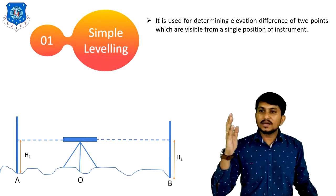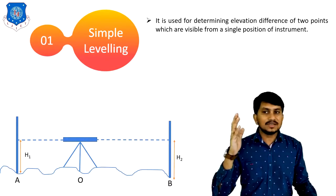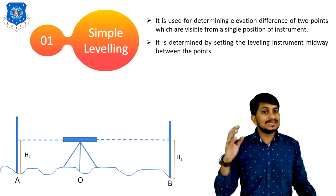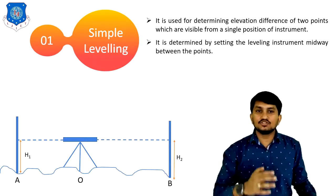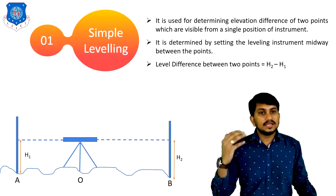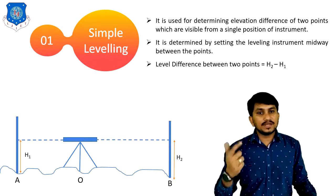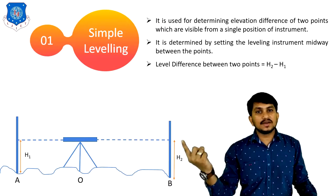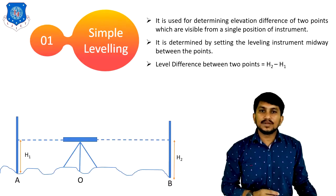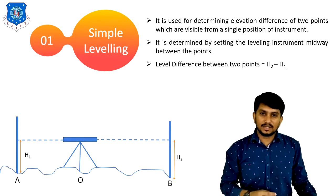Simple leveling is used for determining the elevation difference of two points which are visible from a single position of the instrument. It is done by setting the leveling instrument midway between the points. The level difference between two points is found by taking the difference between the two staff readings, H2 minus H1. This is the simple type of leveling where only one setup is required.